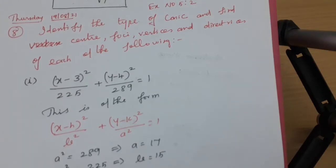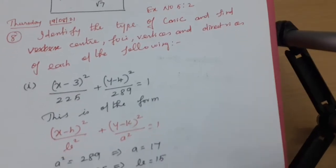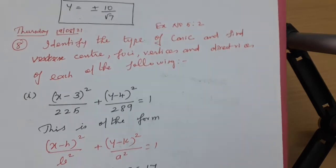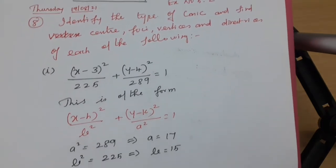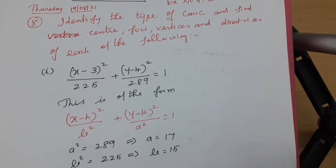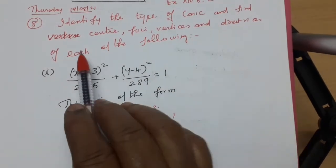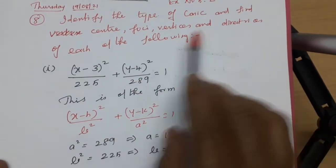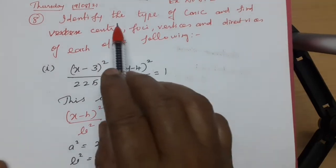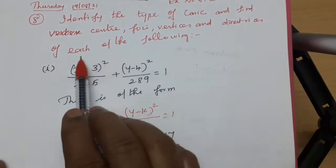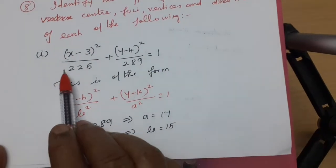Good afternoon students. For Thursday's video class, I am going to continue the ellipse. I'll explain one by one easily so if you go through the video you can easily understand. The question asks: identify the type of conic, find the center, foci, vertices, and directrices of each of the following.